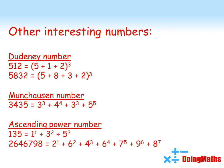Or you can have something called an ascending power number. This is where you take each of the digits and raise it by an ascending power. So 135 is the same as 1 to the power of 1, add 3 squared, add 5 cubed. 2,646,798 is also an ascending power number, because if you take each of those digits and raise it to a power that's getting one bigger each time, add them all together, you get back to where you started.